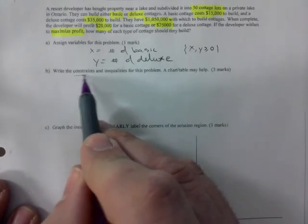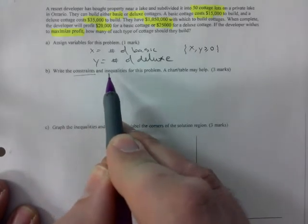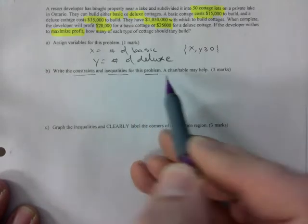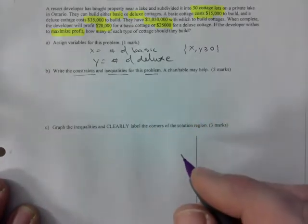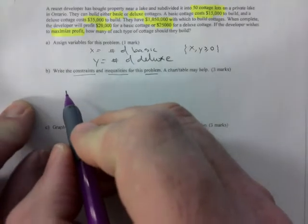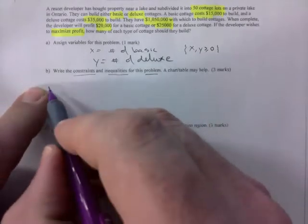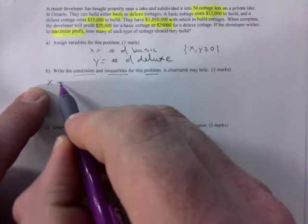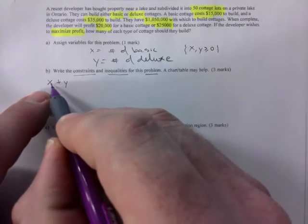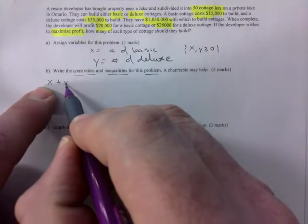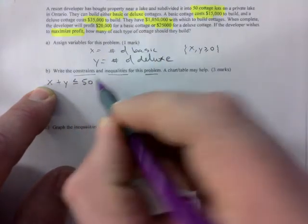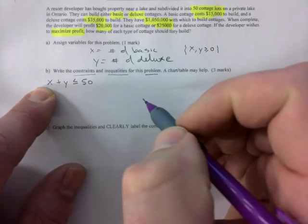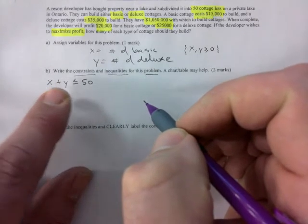Write the constraints, those are the restrictions and inequalities for this problem. A chart may help, I don't do charts and tables that's not how I did it this time. So basically the first inequality is that the deluxe and the basic combined cannot be more than 50 because that's how many lots you have.